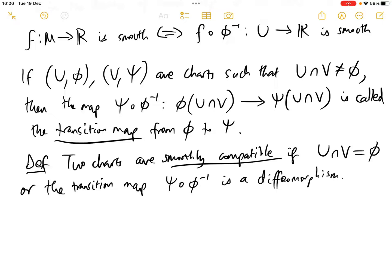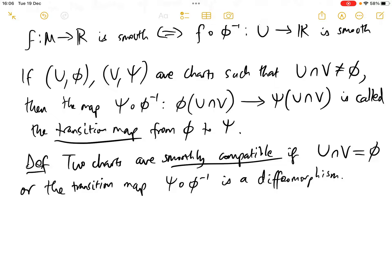And since phi of U intersect V and psi of U intersect V are open, smoothness of this map is interpreted in the ordinary sense of having continuous partial derivatives of all orders.